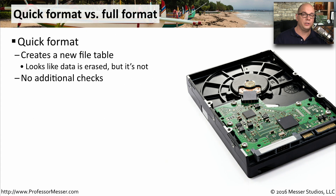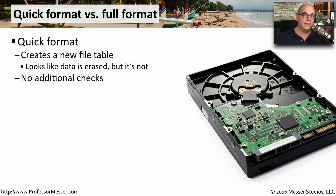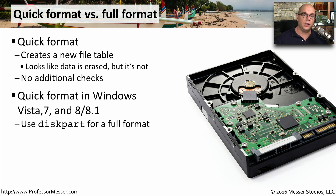When you're installing Windows and creating a partition and a file system, it will perform a quick format on that partition. This is creating a brand new file table. If there was a file table there originally, it will simply overwrite it. It doesn't erase any additional information on the drive, doesn't change any other files, and doesn't perform any additional checks. It simply overwrites the existing file table. In fact, during the installation, a quick format is your only option.